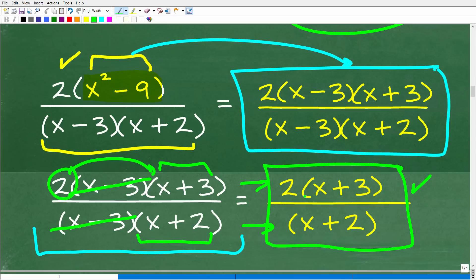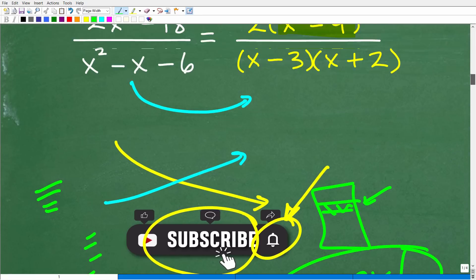All right, so this is the final answer. Again, you could just take this 2, multiply back in, so you have 2x plus 6. But that's not necessary. All right, but what is necessary is your ability to factor.